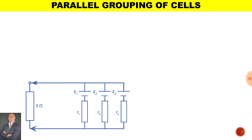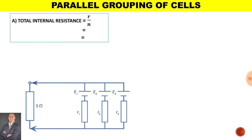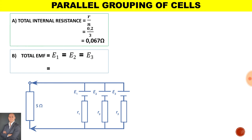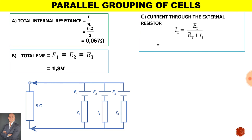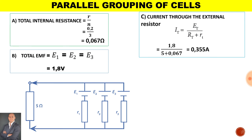Let's have a look at an example. We have three cells connected in parallel across a load resistor of 5 ohms. The EMF for each cell is 1.8 volts and the internal resistance for each cell is 0.2 ohms. To calculate the total internal resistance it will be 0.2 divided by the number of cells. The total EMF for cells in parallel remains the same, therefore it will be 1.8 volts. The current throughout the circuit will be the total EMF divided by the resistance total, giving 0.355 amps flowing throughout the circuit.